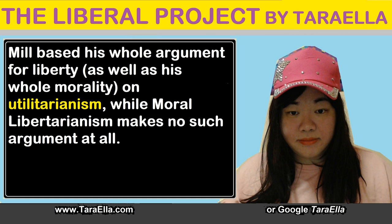Mill's liberalism was based on a utilitarian philosophy. Indeed, he stated that he was willing to forgo any advantage which could be derived to his argument from the idea of abstract right as a thing independent of utility. Mill's liberalism was therefore conditional on his observation that a liberal society would provide the best quality of life for individuals in a civilized society.